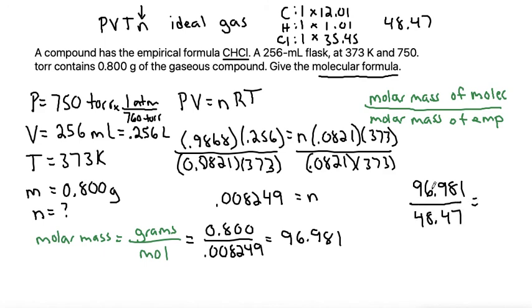So I'm going to plug that in on the bottom, which if I divide, 96.98 divided by 48.47 gets me almost exactly 2. That means that I need to multiply my subscripts of my empirical formula by 2 to get to my molecular formula. Since they're all not written, that means they're all 1s. So multiplying 2 by 1s just gives 2, which makes C2H2Cl2, which would be my molecular formula and the final answer.